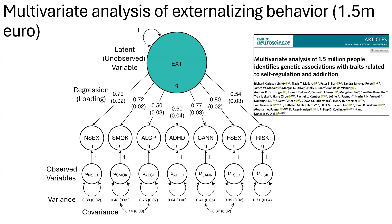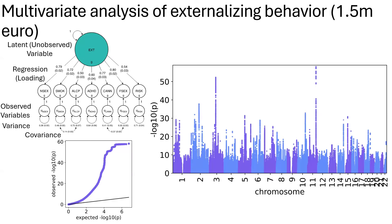The externalizing trait was defined from seven different phenotypes in humans: number of sexual partners, lifetime smoking initiation, problematic alcohol use, ADHD, lifetime cannabis use, age at first sexual intercourse (reverse coded), and general risk tolerance. They defined a latent unobserved externalizing trait in 1.5 million people of European background.